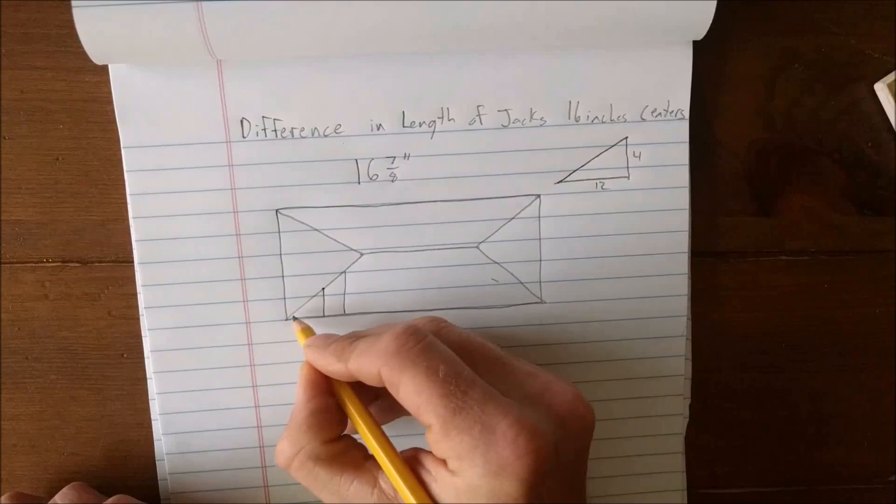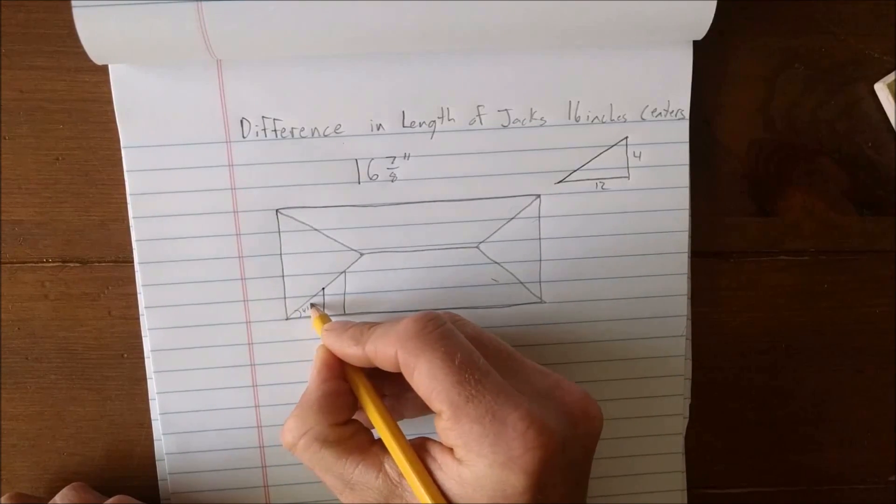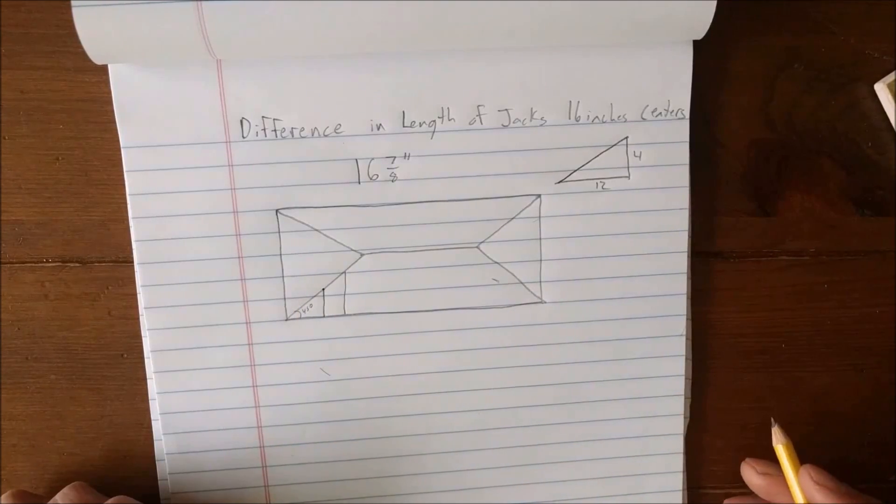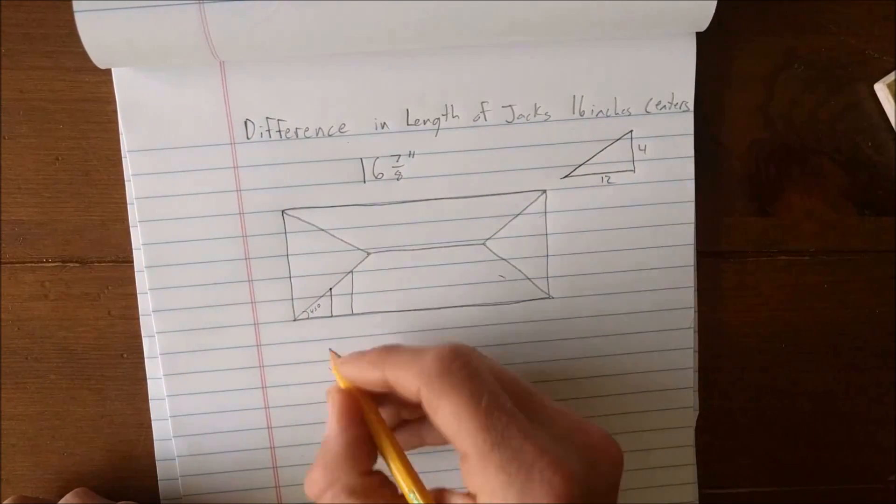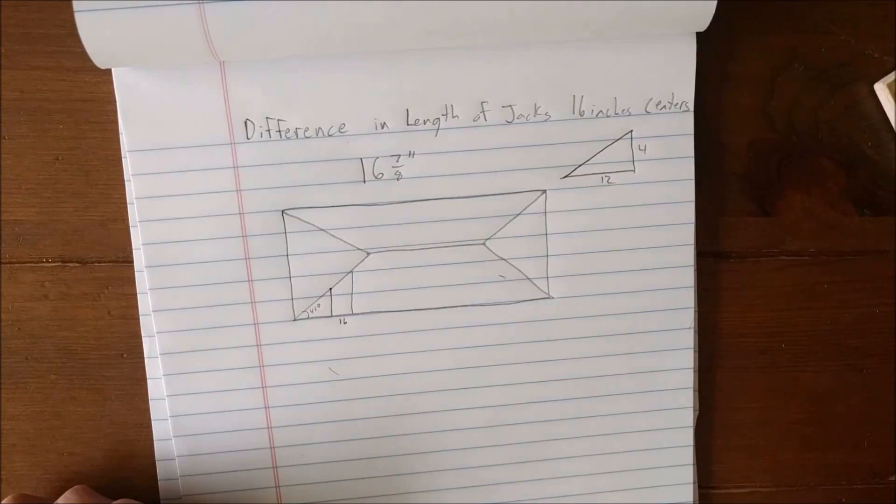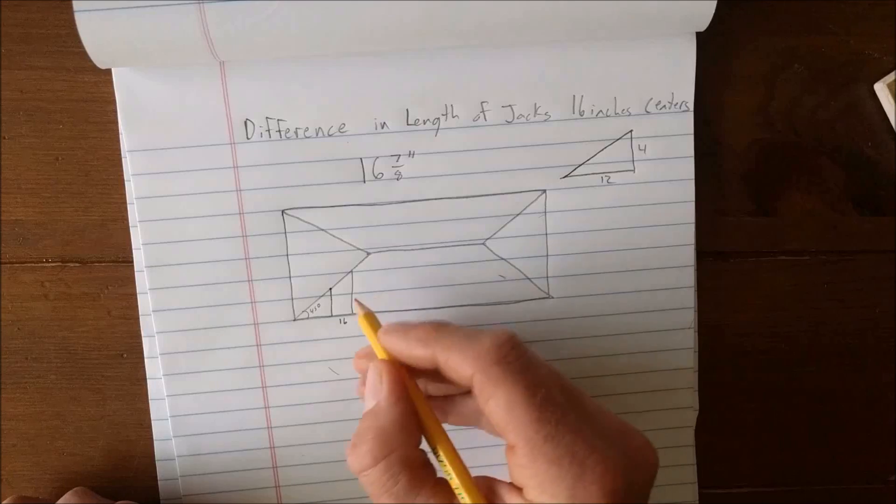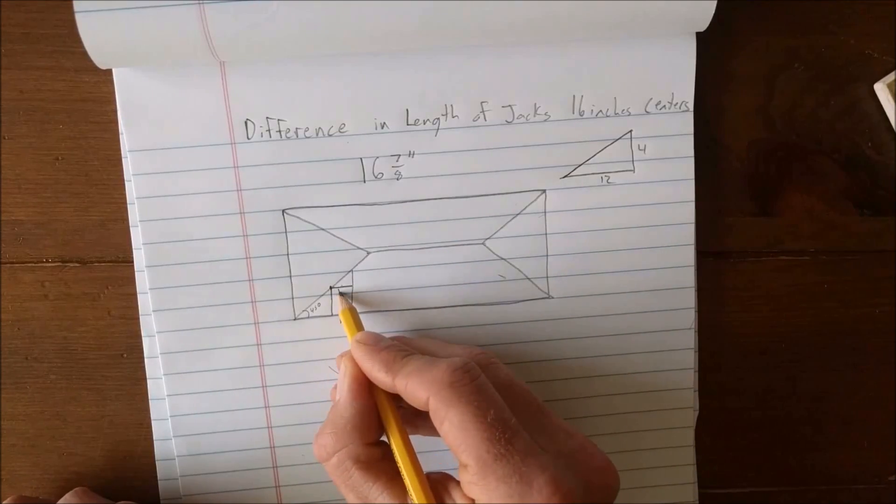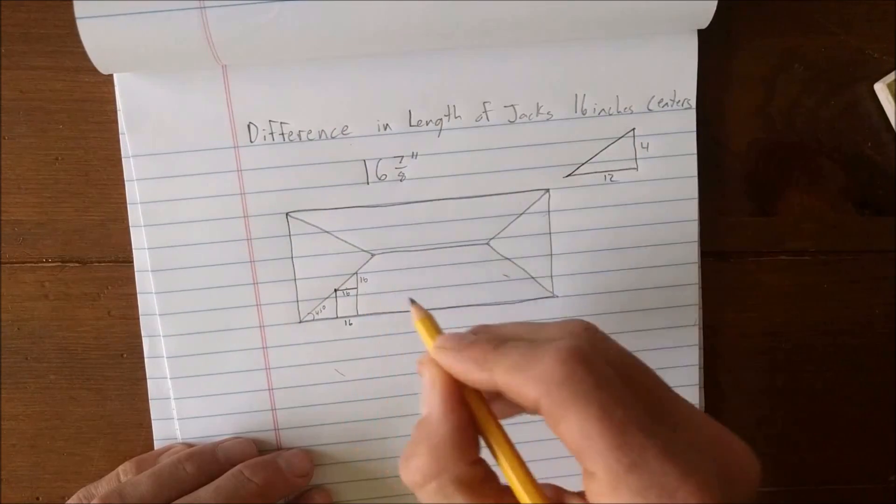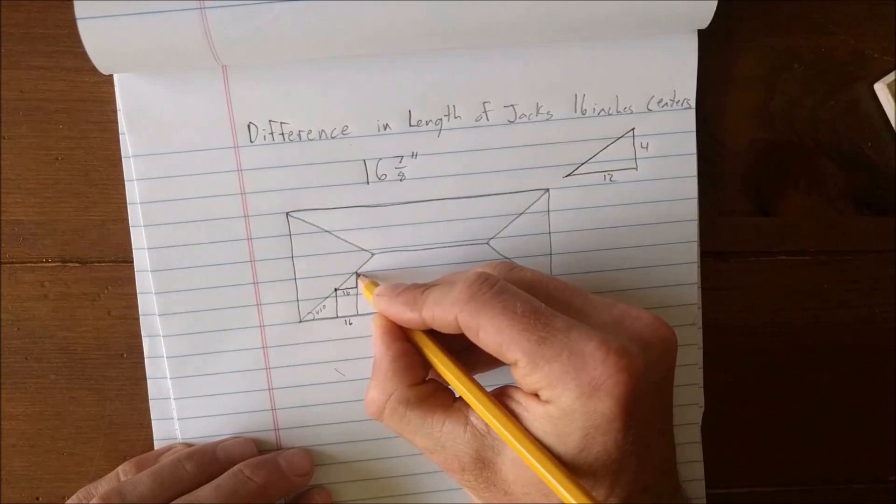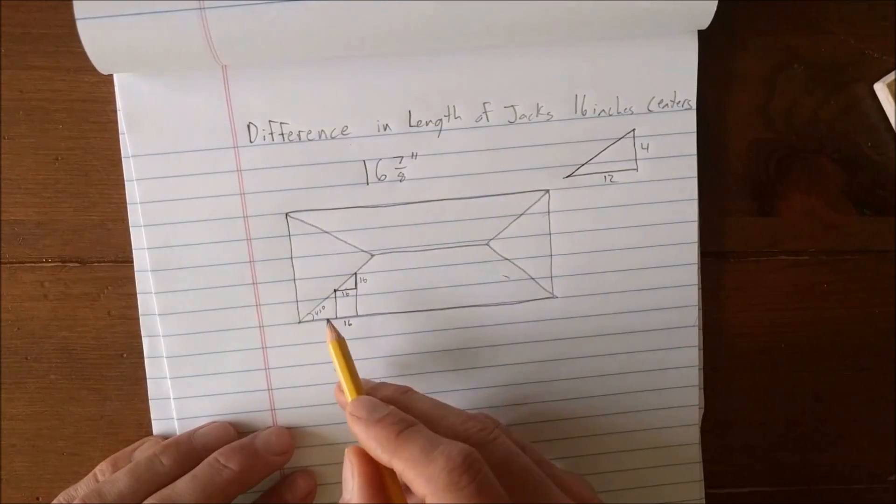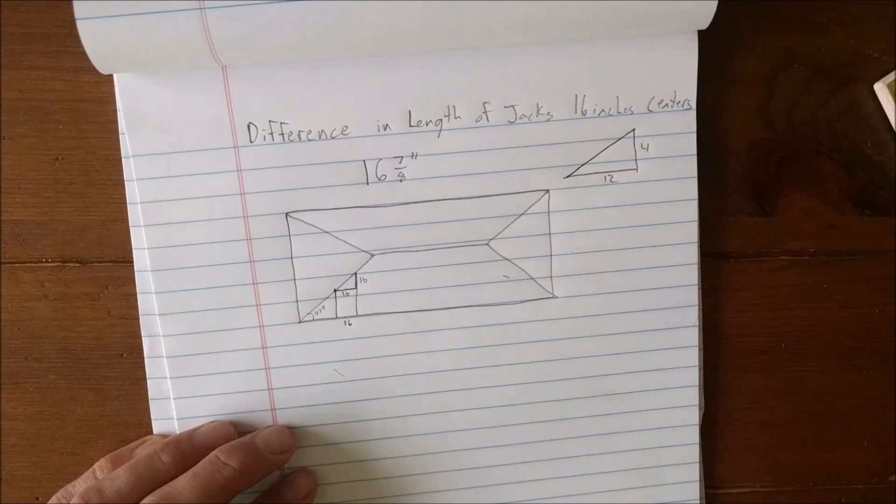And since the hip rafter is at a 45 degree angle to the plates, naturally these hip jack rafters have to get smaller as we get closer to the end of the roof. Since we're talking about 16 inch centers, I'm going to say that these lines are 16 inches apart. Since we have a 45 degree line representing the hip rafters, I know that 16 inches of run is also 16 inches of rise. And that means that if I find out what the length of this jack rafter segment is, that is the difference in length between these two jack rafters.